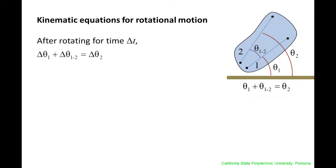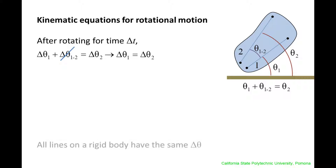Let's imagine the rigid body rotates for a time interval delta t. Theta1 would change by delta theta1, and theta2 would change by delta theta2. However, delta theta12 does not change, and so delta theta12 is 0. We are left with delta theta1 equals delta theta2. Line 1 undergoes the same angular displacement as line 2. Since the lines were drawn arbitrarily, this means that all lines on a rotating rigid body undergo the same angular displacement.